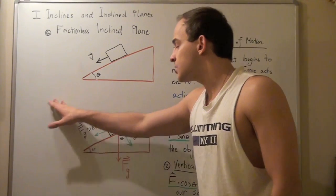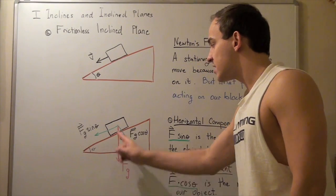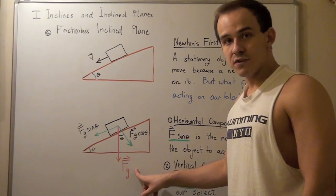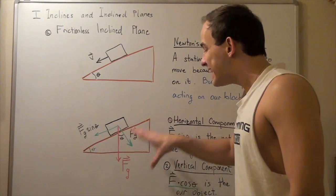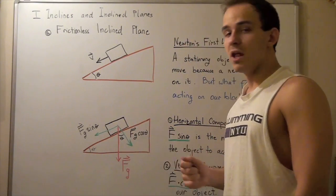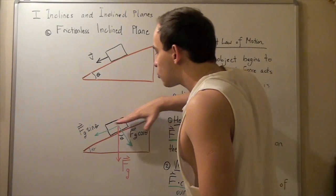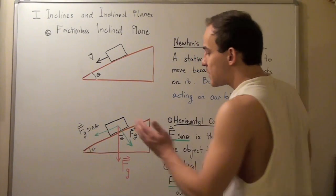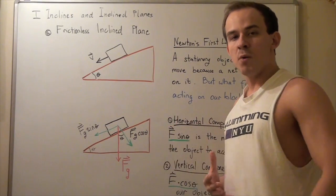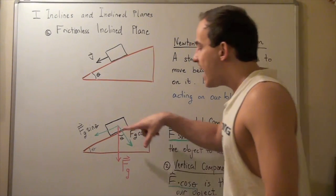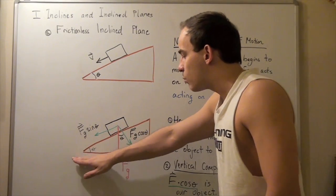Let's examine this illustration. The force of gravity acts straight downward on our block — this red vector is our force due to gravity, pulling downward. Now, if we look at the inclined plane surface as the x-axis and the perpendicular direction as the y-axis, we can break this vector into its y-axis component and its x-axis component. The angle between these vectors corresponds to the angle of the inclined plane.